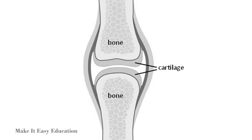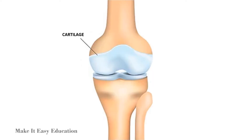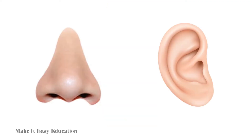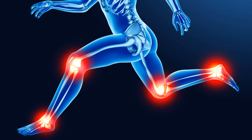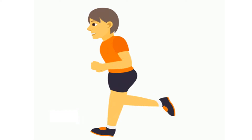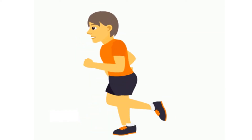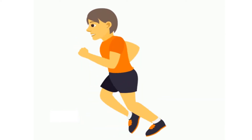At the joints, the surfaces of the bones are covered with cartilage. Cartilage is a strong, elastic, yellowish or white-colored substance present around the joint. Cartilage can bend. Organs such as the nose and ears also have cartilage. Cartilage protects the bones from getting damaged as a result of the constant movements that take place at the joints.